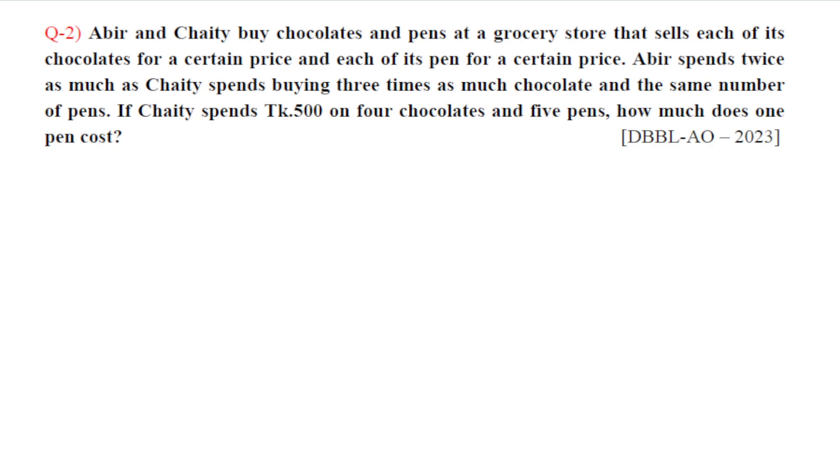Question number two: Abir and Chaity buy chocolates and pens at a grocery store that sells each of its chocolates for a certain price and each of its pens for a certain price. Abir spends twice as much as Chaity spends buying three times as much chocolate and the same number of pens. If Chaity spends Tk. 500 on four chocolates and five pens, how much does one pen cost?